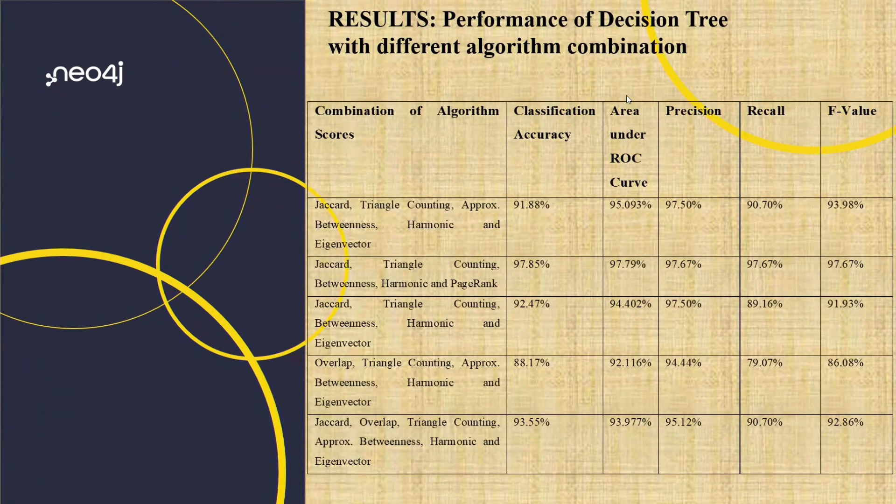Since there was nothing in the literature which specified about the combination of algorithms that I could use, I just tried a bunch of algorithms which I'm still working on, and I came up with certain scores. I imported these scores on another platform which is for running decision trees, and I got my performance metrics.